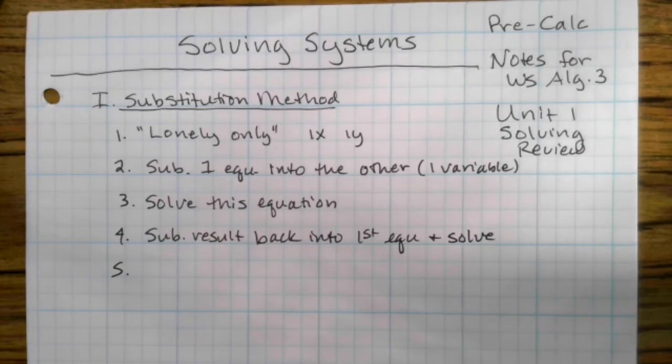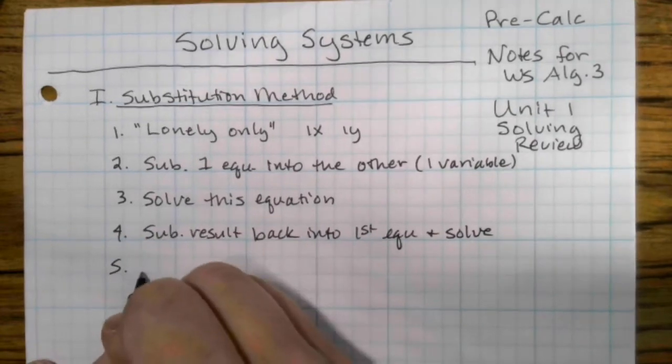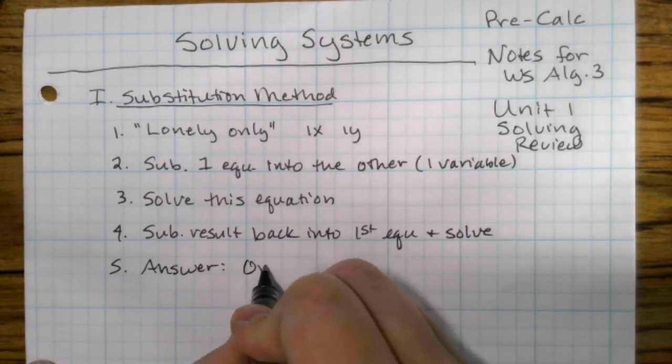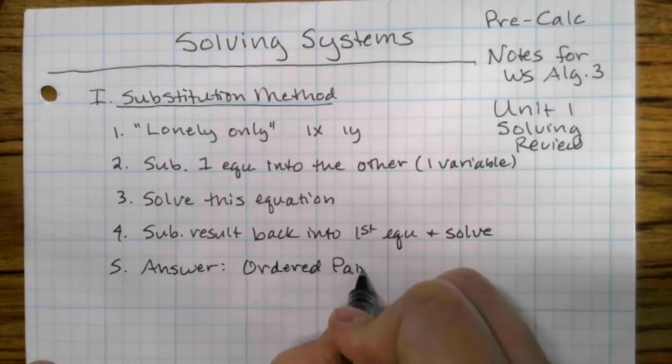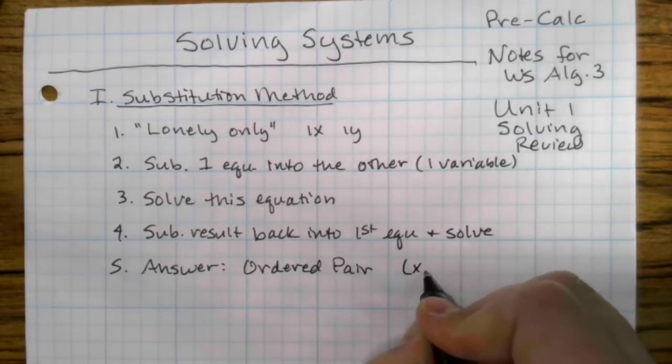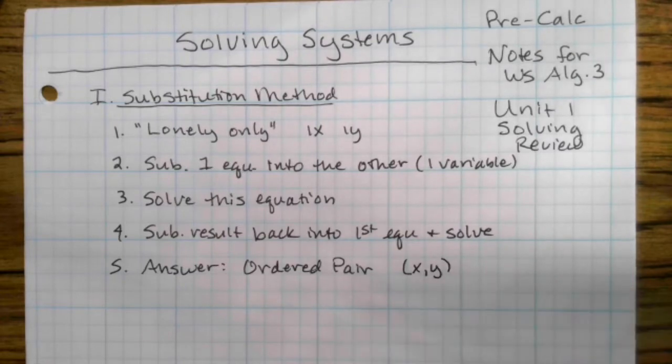When you're solving in your systems, you're solving in x and y. So your answer is going to be an ordered pair. An ordered pair simply means that the x and the y come together. So if you have an x and a y, they're separated by a comma and put in parentheses.